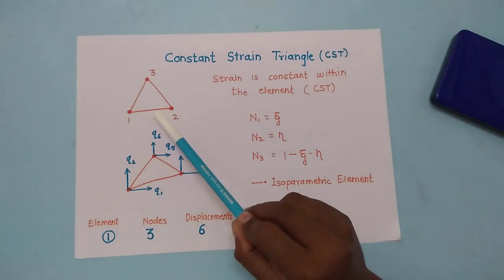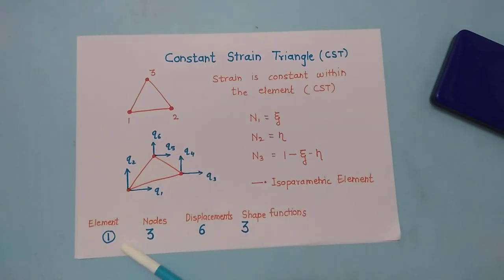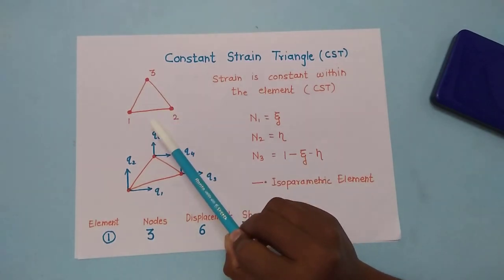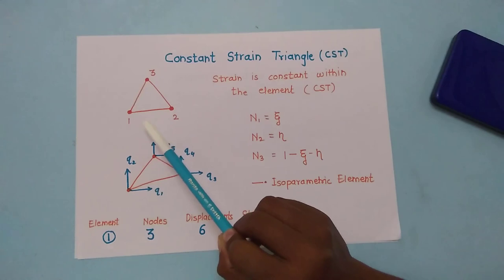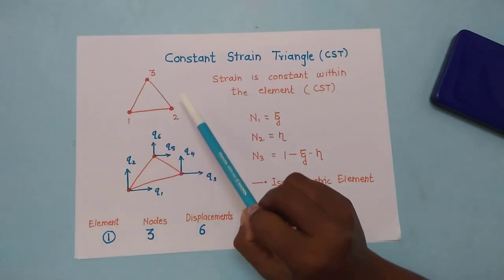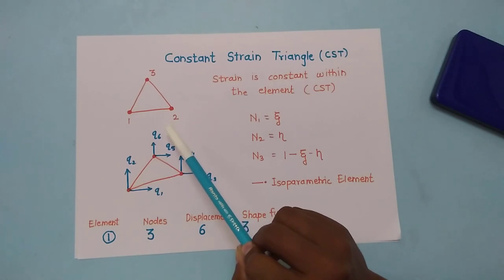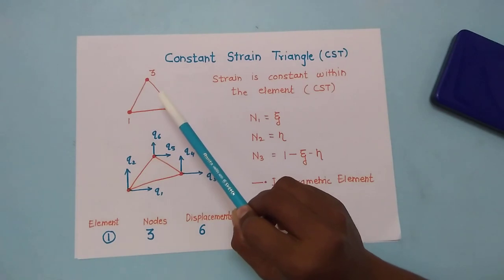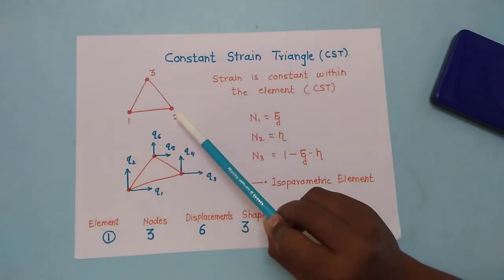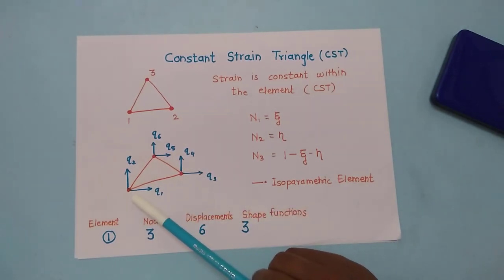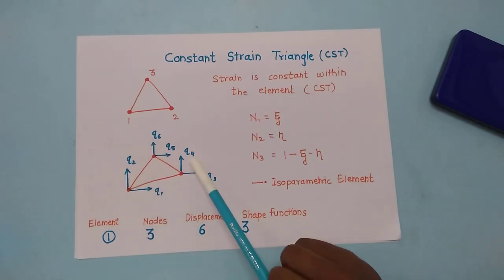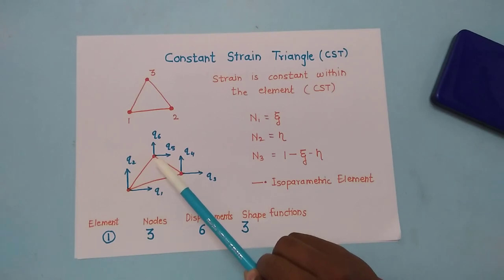For this triangular element, we consider a single element with three nodes numbered one, two, and three. The node numbering follows the anti-clockwise direction, as required by the software algorithm. Each node has two degrees of freedom — two displacements: q1 and q2 at node 1, q3 and q4 at node 2, and q5 and q6 at node 3.